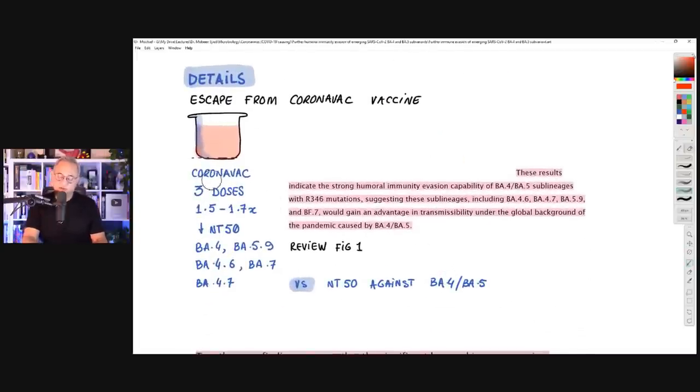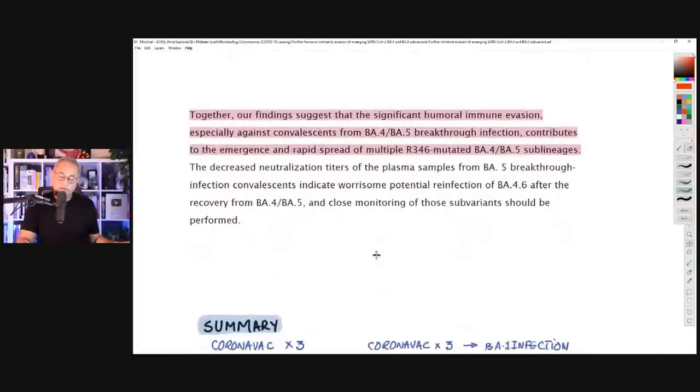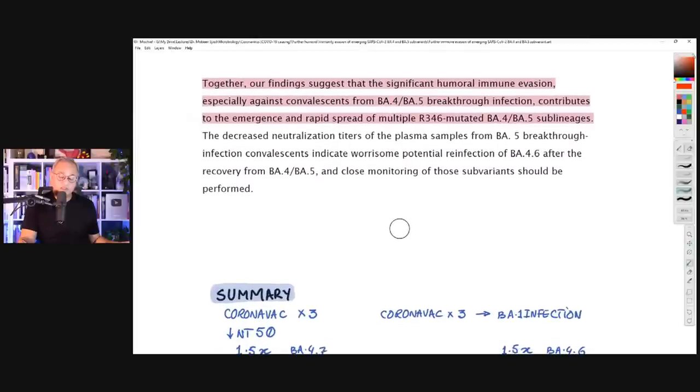I have a link in the description for one more study just to understand how these NT50-based measures are done. And as I said before, Beptilovimab is still working, Evusheld is gone. Details. It is something interesting. CoronaVac only, just a vaccine, three doses. BA.4.6 has escaped 1.5 to 1.7 times lower potency for NT50. They say these results indicate the strong humoral immunity evasion capability of BA.4, BA.5 sub-lineages with R346 mutations.